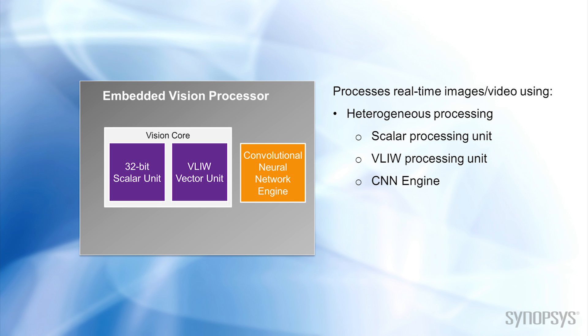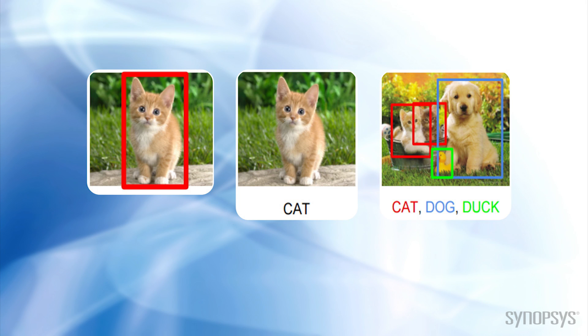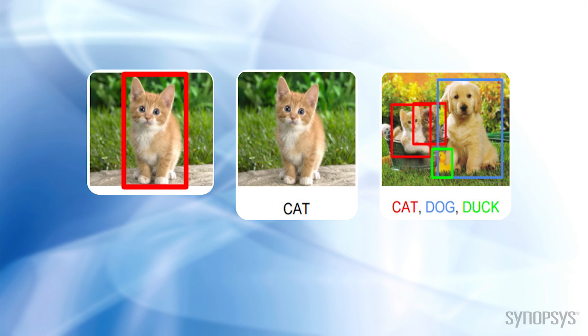The latest state-of-the-art embedded vision processors also include a dedicated convolutional neural networking engine for handling object detection, classification, and recognition tasks.